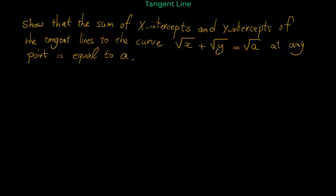Because the given relation is an implicit relation, we use implicit differentiation for finding the slope of the tangent line. But before we start, let me remind you of the derivative of square root of x. We write it in the form x to the one half, and then its derivative is one half times x to the power of one half minus one, which is negative one half.